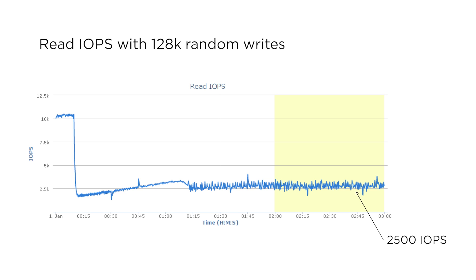If we use 128K random writes — small bytes that are written across the drive randomly — you see the quick fall off in read performance as the disk fills up and garbage collection is run. Once everything settles out, we see about 2,500 read I/Os with a pretty rough, variable latency profile.